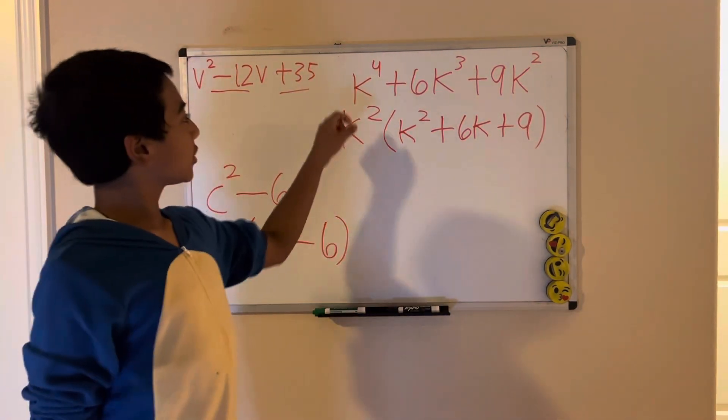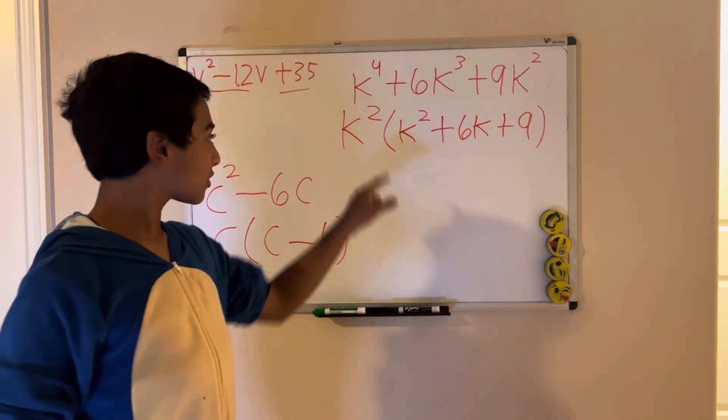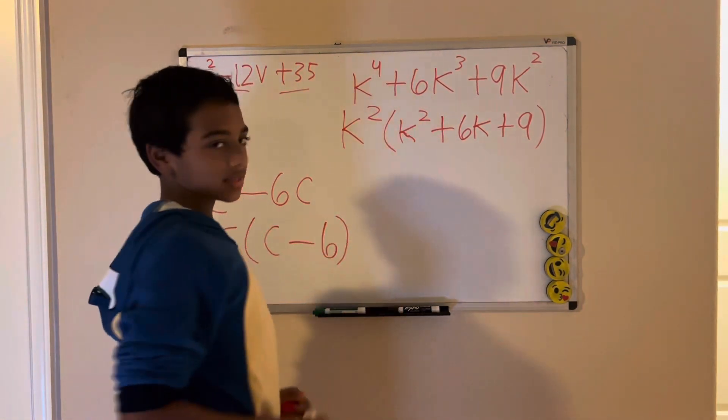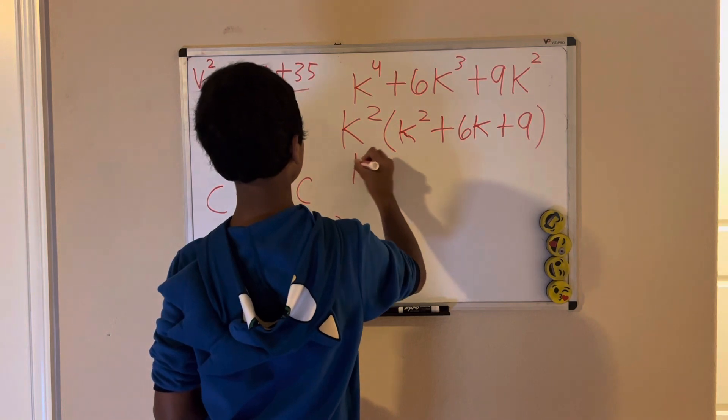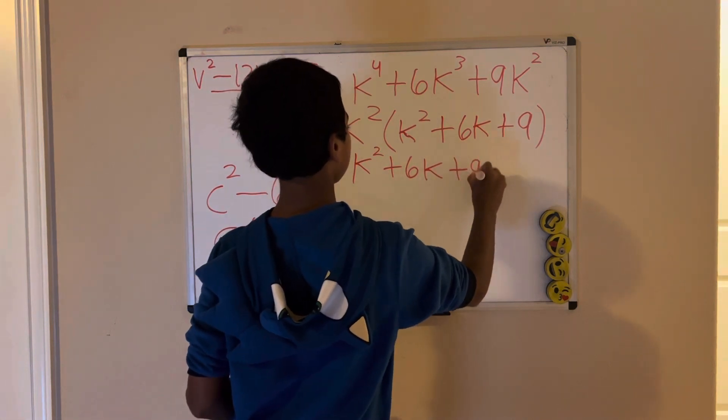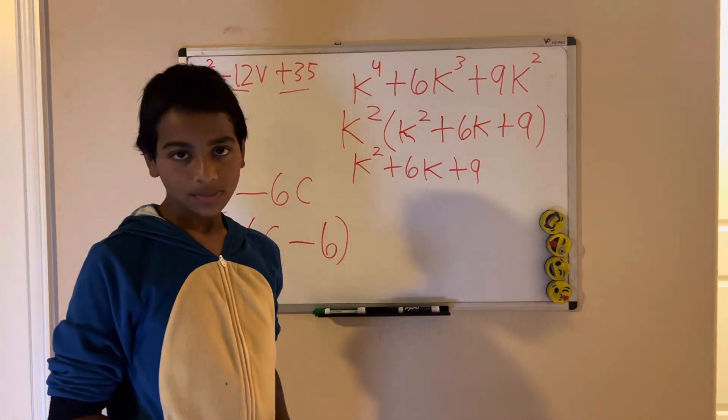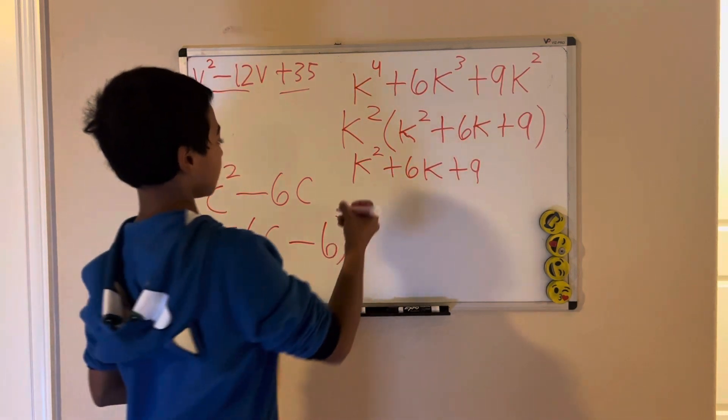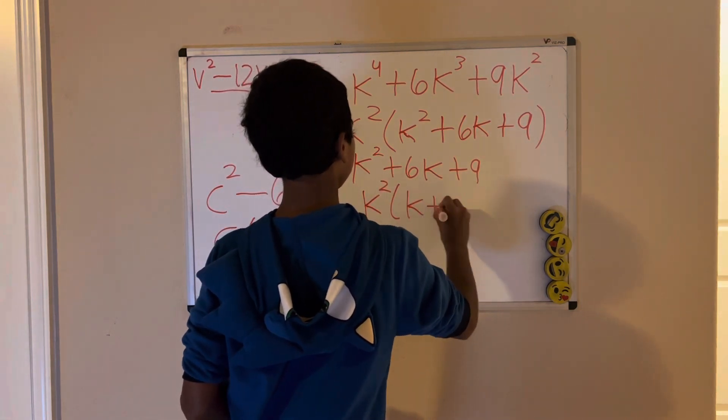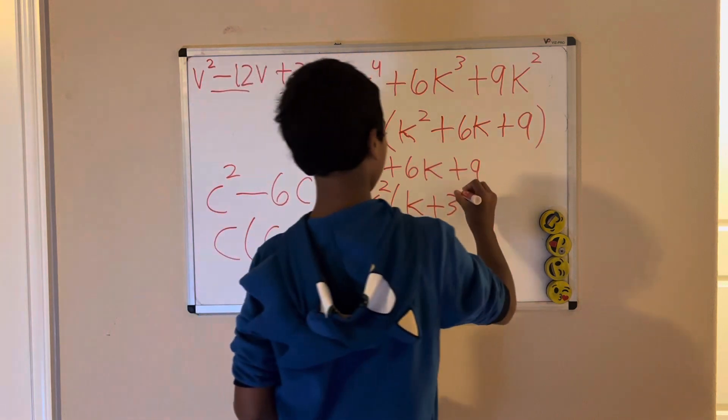After we factored the GCF, we have k squared times k squared plus 6k plus 9. We still need to factor this expression. Same thing as the first problem. What two numbers multiply to give us 9 but add to give us 6? They are 3 and 3. So, plugging k squared into there, we're going to have k squared times k plus 3 times k plus 3, which we can write as k plus 3 squared.